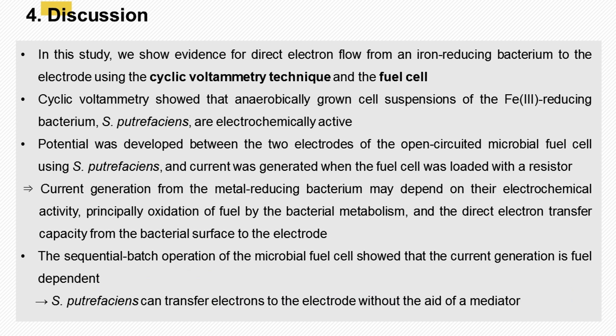Discussion. Biofuel cells need electrochemical mediators for efficient electron transfer from microbial cells to an electrode. In this study, we show evidence for direct electron flow from an iron-reducing bacterium to the electrode using the cyclic voltammetry technique and the fuel cell. Cyclic voltammetry showed that anaerobically grown cell suspensions of the ferric iron-reducing bacterium S. putrefaciens are electrochemically active. These results suggest that current generation from the metal-reducing bacterium may depend on their electrochemical activity, principally oxidation of fuel by bacterial metabolism, and the direct electron transfer capacity from the bacterial surface to the electrode.